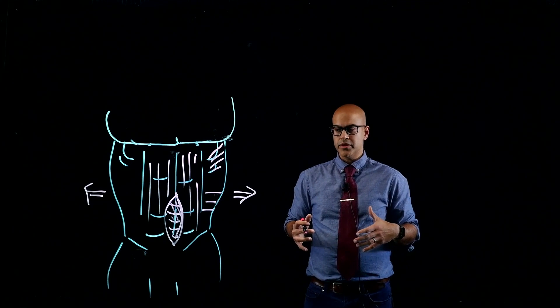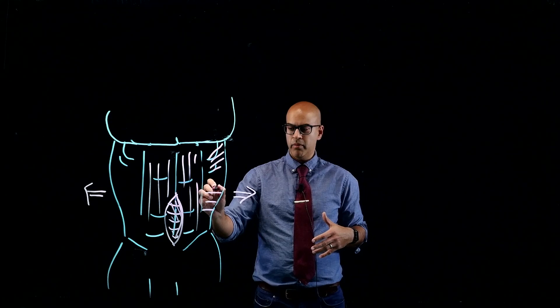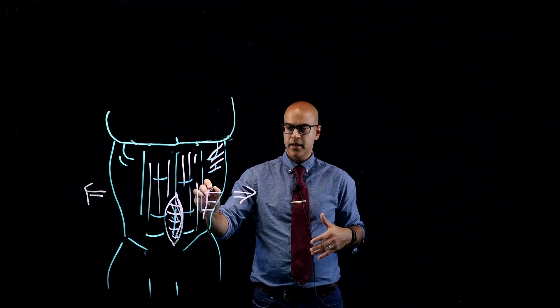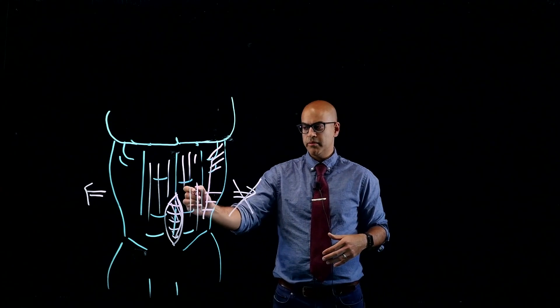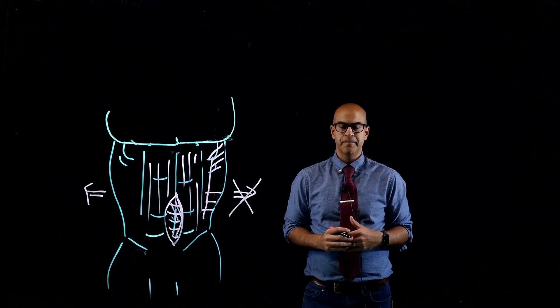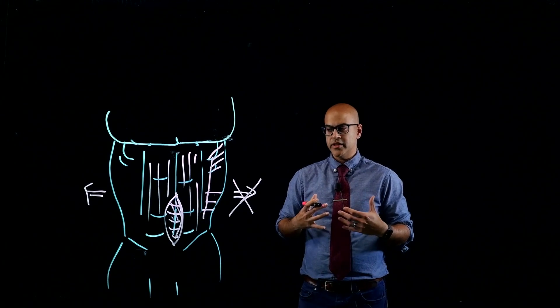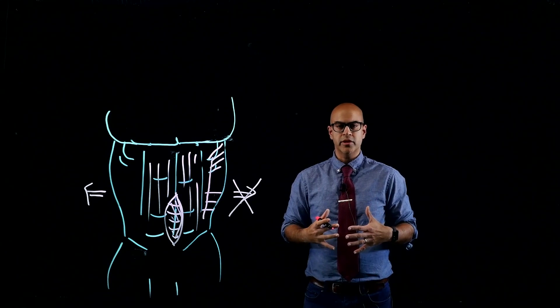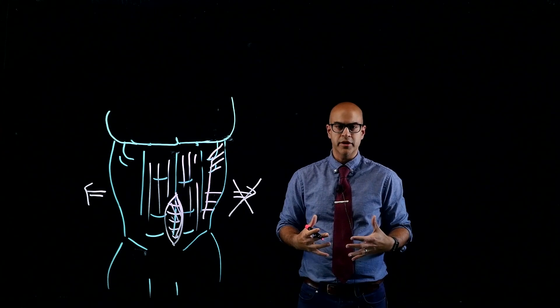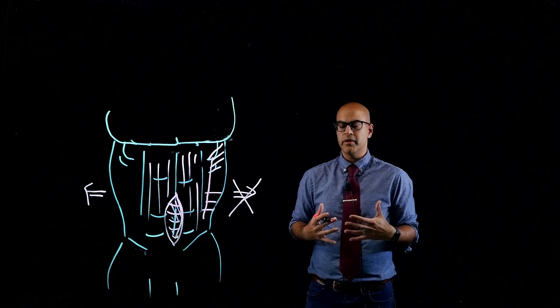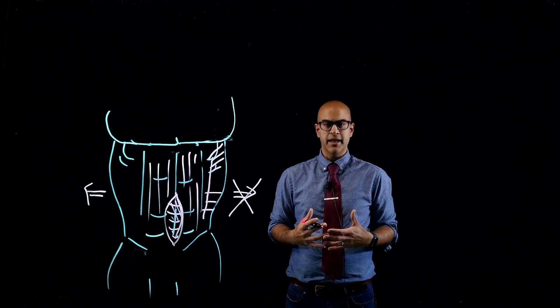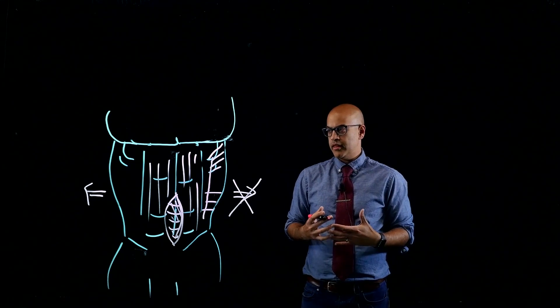So what we do in surgery is we go in and we cut one of these muscles. And what this does is this takes away that tension so we can put your six-pack muscles back together. When we do that, that's not only fixing your hernia but it's also restoring your core abdominal function. You can go back to coughing and lifting and using your core muscles the way that they were originally designed to do.